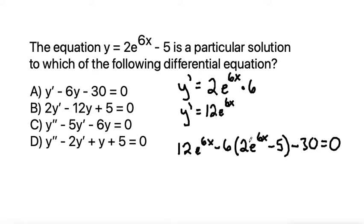Okay, so now we want to simplify and to see if this equation is true. So distributing in our negative 6 to the parentheses, we get, just bring down the 12e to the 6x. Negative 6 times 2 is negative 12, so negative 12e to the 6x. Distributing the negative 6 to the negative 5 makes a negative times a negative is a positive, 6 times 5 is 30, so plus 30. And then I'll bring down the minus 30 equals 0.